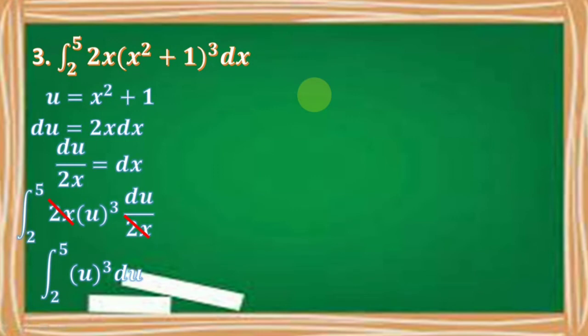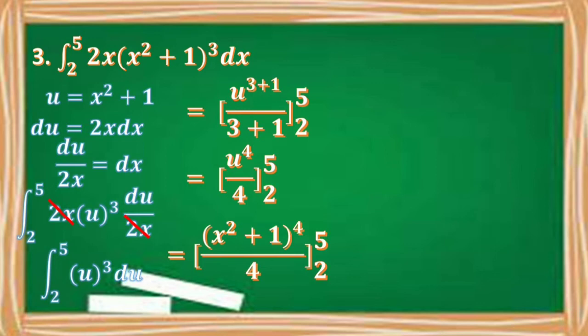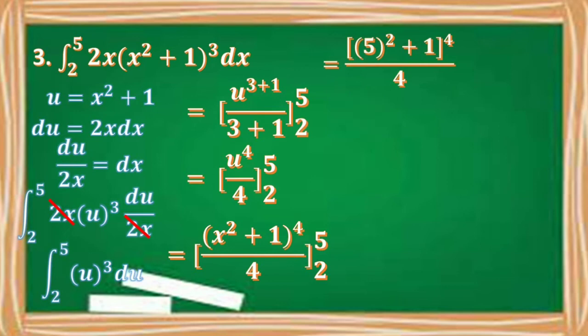Getting the antiderivative of u cubed du, we have u raised to 3 plus 1 over 3 plus 1, which gives us u to the 4th over 4 from 2 to 5. Replacing u by x squared plus 1, we have the quantity x squared plus 1 raised to the 4th over 4 from 2 to 5. Solving for the upper limit by replacing x by 5, we get 5 squared plus 1 equals 26, so we have 26 to the 4th over 4.